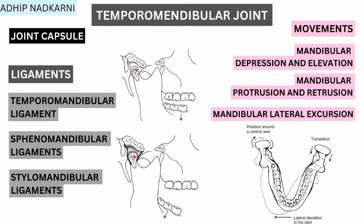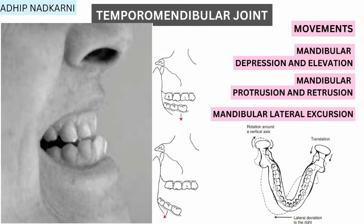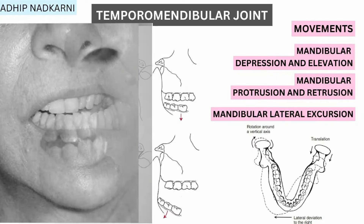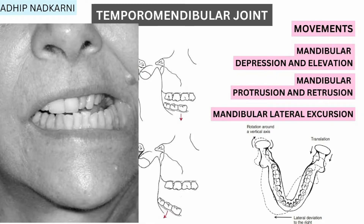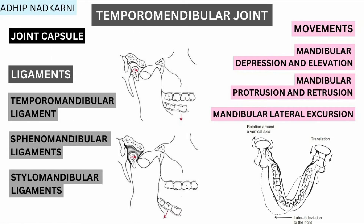When we talk about movements of the temporomandibular joint, there are three movements to discuss: mouth opening and closing, protrusion and retrusion, and lateral deviation of the mandible. Mouth opening and closing is the primary movement with the largest range of motion. Protrusion and retrusion is moving the teeth forward and backward, and lateral deviation is moving the jaw side to side, which is a very minimal movement.